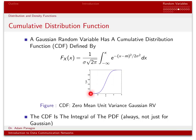Similarly, the probability of being less than or equal to minus 4 is very small — close to 0 but not exactly 0. This is the CDF for a 0-mean unit-variance Gaussian random variable, where m equals 0 and sigma squared equals 1, so sigma equals 1.